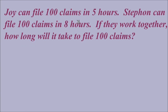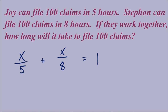Here's an example for you to try — pause the video and try this problem, then restart and we'll look at the answer together. Joy can file 100 claims in 5 hours. Stefan can file 100 claims in 8 hours. If they work together, how long will it take? Remember: time together belongs in each numerator, time for each person alone goes in each denominator. The unknown x is the time together. Joy can do it in 5 hours and Stefan in 8 hours.